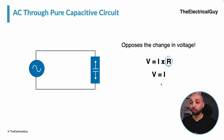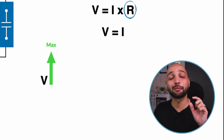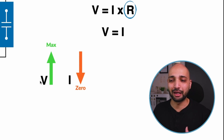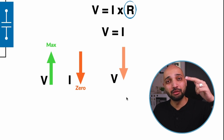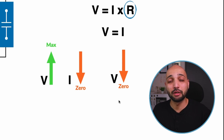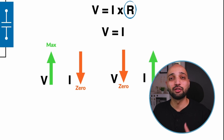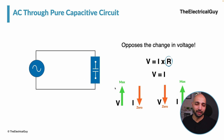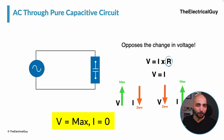A capacitor can control voltage by controlling current. Whenever we apply an alternating supply and voltage goes from zero to maximum, the capacitor drops the current to zero so that the voltage can be brought back to its original position. Similarly, when voltage drops from maximum to minimum, the capacitor pushes more current into the circuit to bring the voltage back to its maximum level.